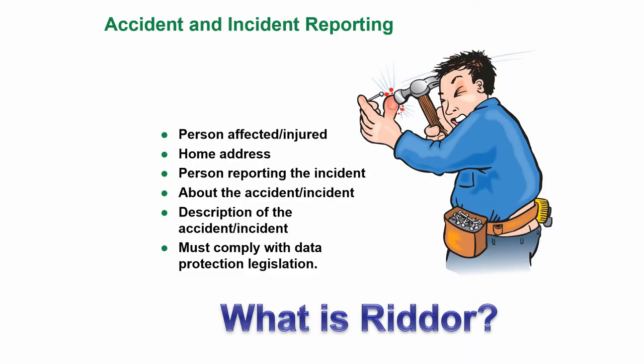Accident and incident reporting — wherever you work, there is going to be an accident book available. If you have an accident, it must be completed, even if it's something that almost causes an accident, such as a near miss — that needs to be reported as well. The sort of things you need to put in the accident book include the person affected or injured, their home address, person reporting the incident, description of the accident and incident, and it must comply with data protection legislation.